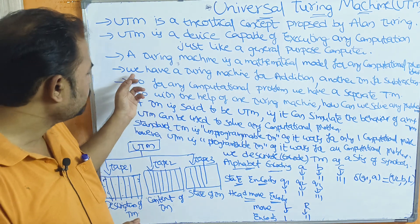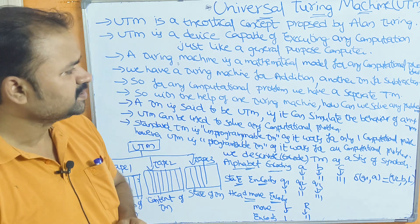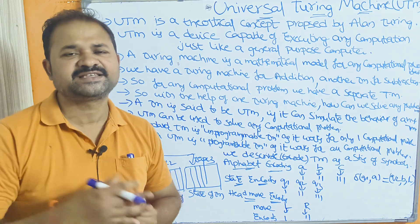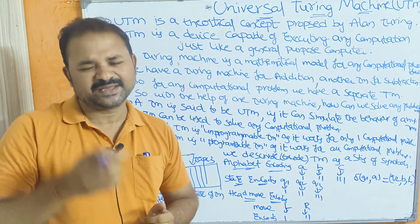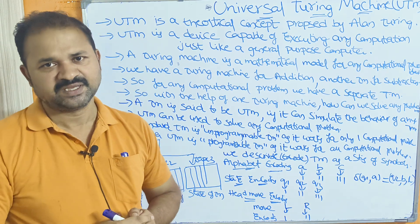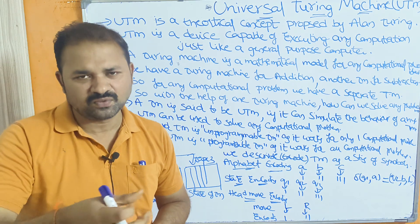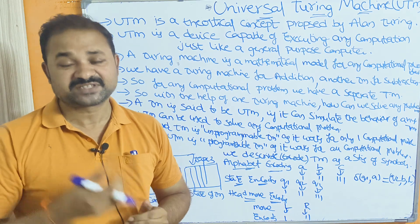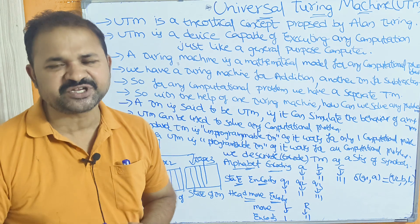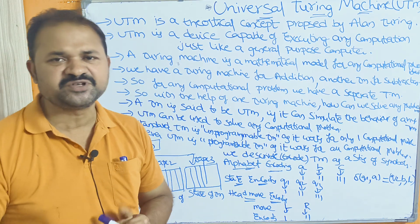We have a Turing Machine for addition and another Turing Machine for subtraction, and so on. For each problem we have its own Turing Machine. So for addition operation we have one Turing Machine, for subtraction we have a second Turing Machine, for multiplication operation we have a third Turing Machine.